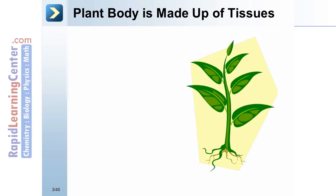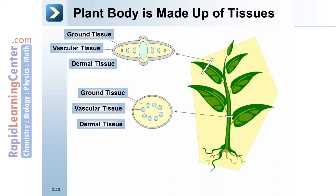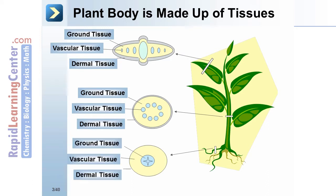The plant body is made up of tissues: ground tissue, vascular tissue, and dermal tissue. In the stem, notice the difference between these tissue types whether it's in the leaf or in the stem, and also notice the similarities. In the root cross-section, notice the arrangement of ground, vascular, and dermal tissue.